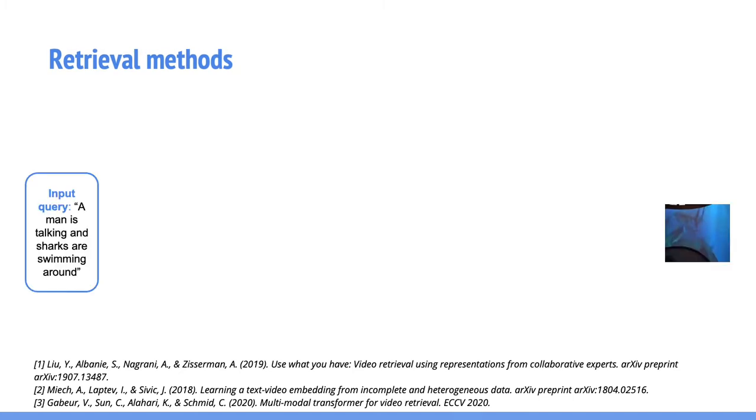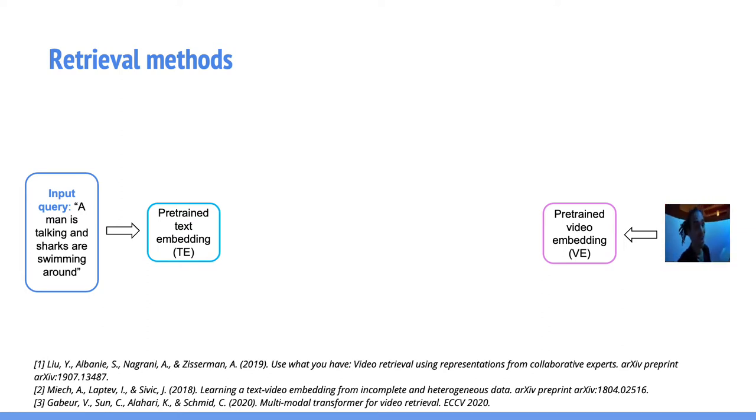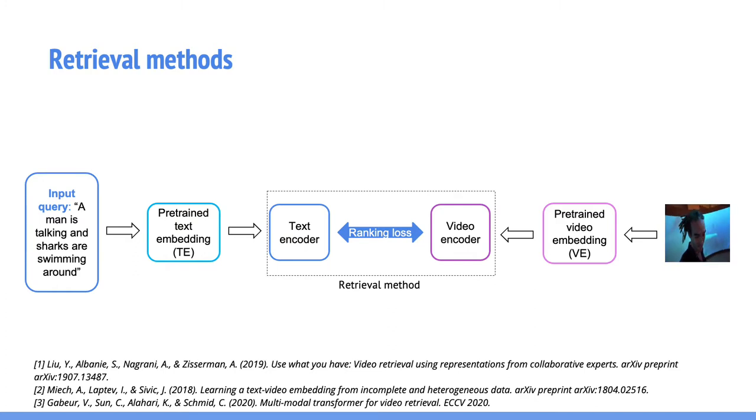I will present now a short overview of how the majority of retrieval methods work. As already stated, we have a text query and a video. The process begins by extracting textual features using a pre-trained text embedding. A similar process happens for the video side as well. Given a video, the video features are extracted using a pre-trained video embedding. After having the features, it is time to train the retrieval model. The final goal is to learn a joint embedding between text and video using a ranking loss.